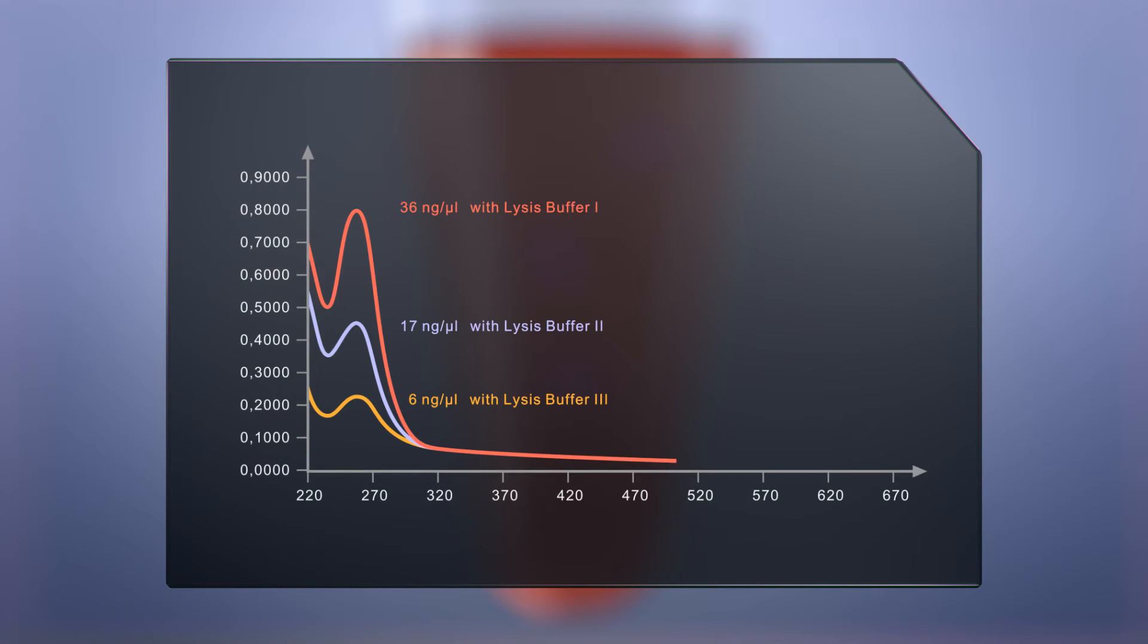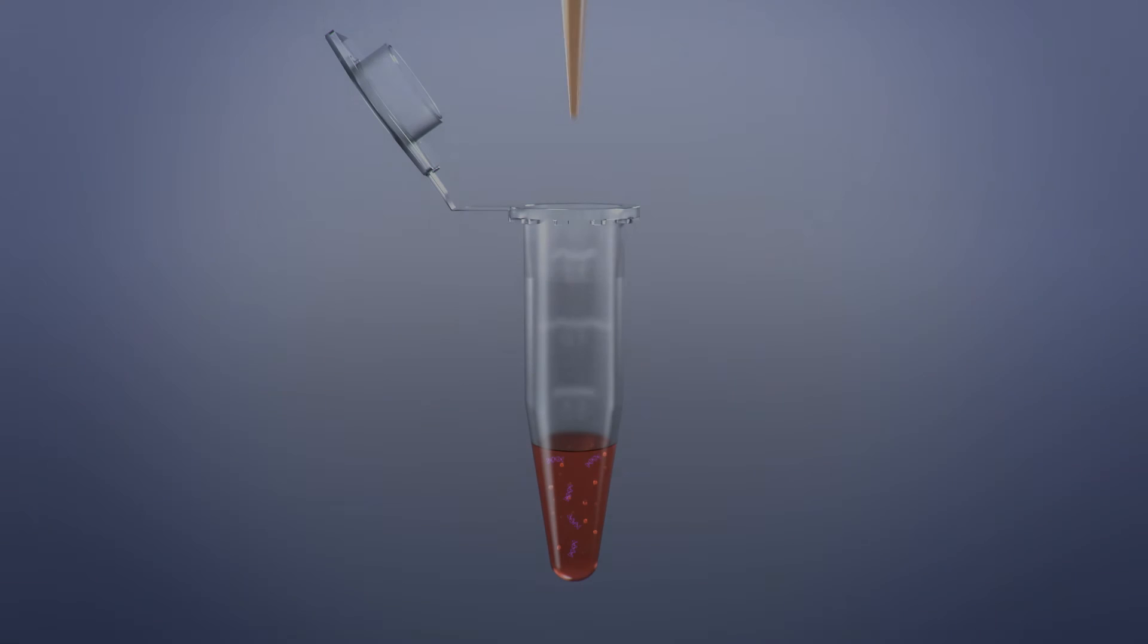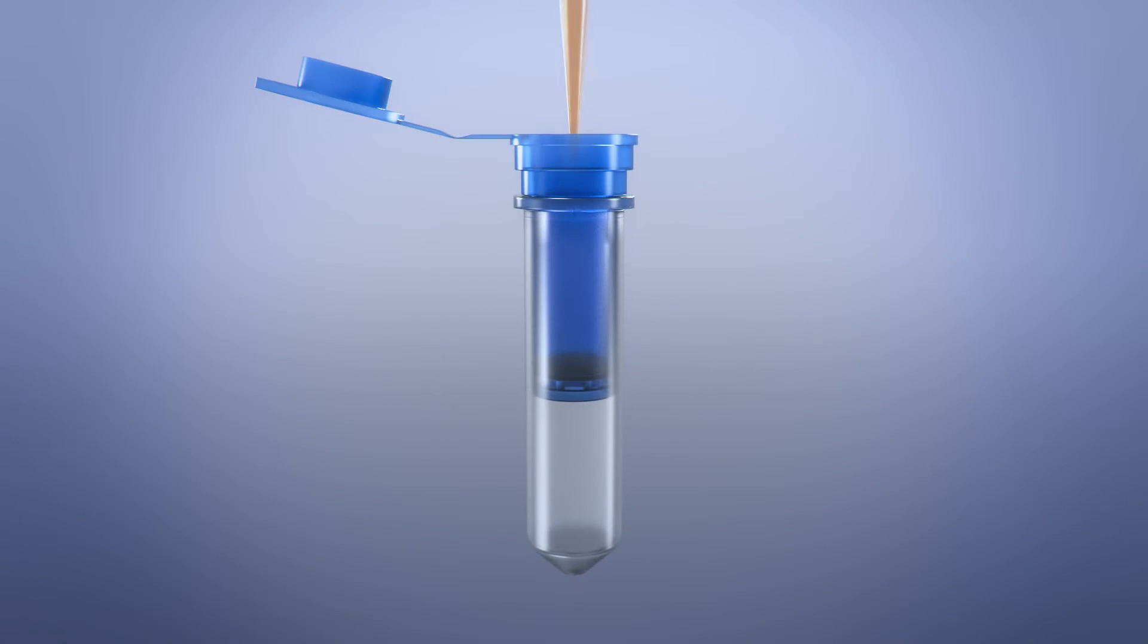Additionally, Analytic Jena kits contain up to three different lysis buffers to adapt effectively to different starting materials. The innovative binding buffer system allows researchers to selectively bind DNA and RNA to the surfaces of spin filters or to magnetic particles. An additional benefit is that DC technology can be used for processing a large range of starting material volumes.